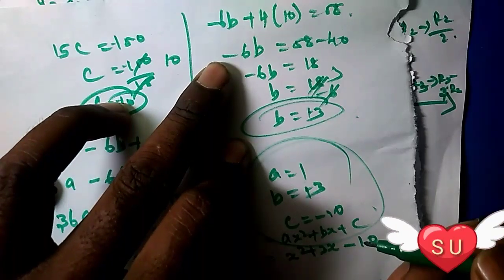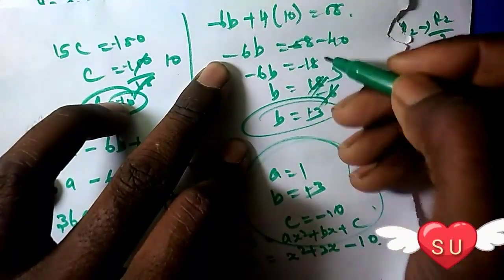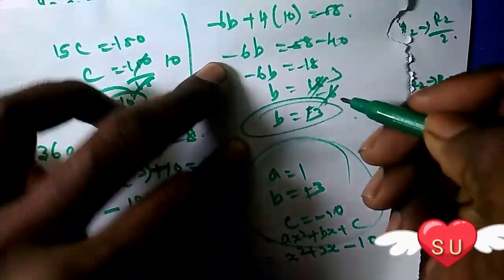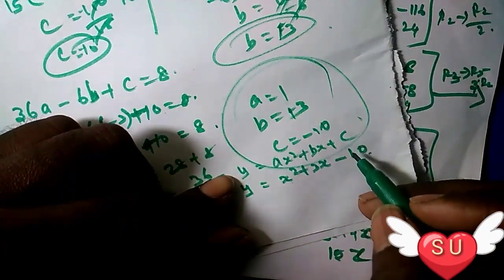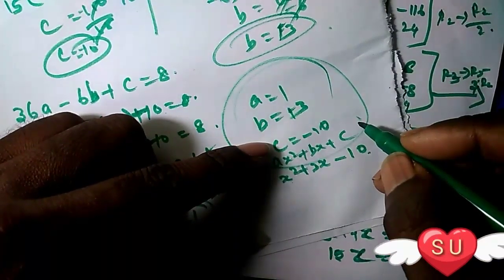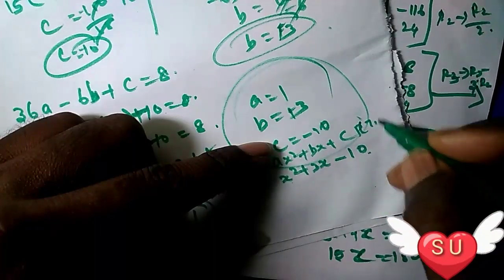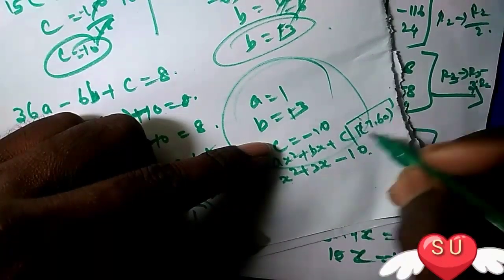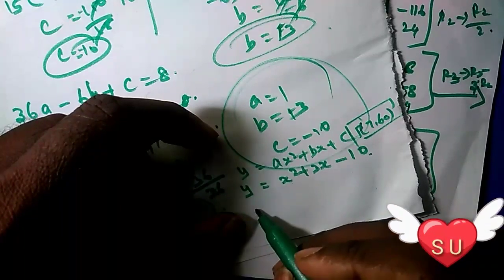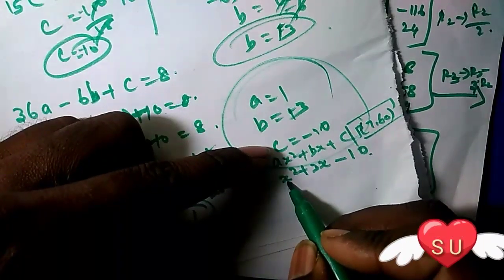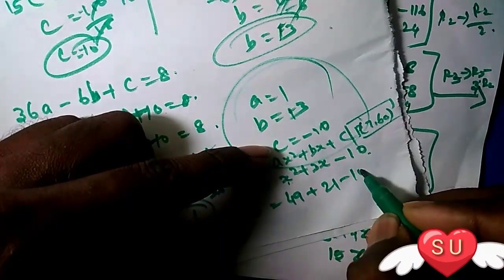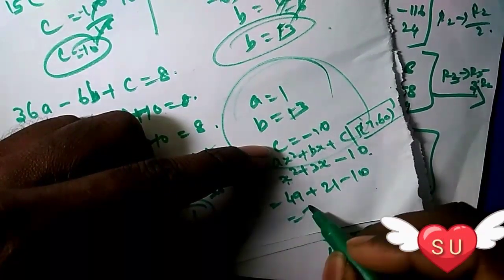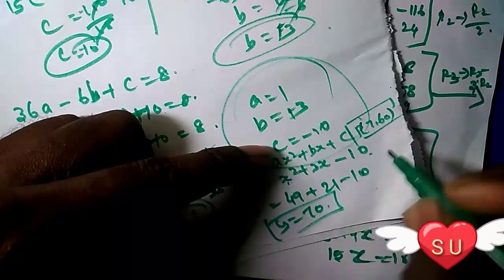Let's verify with a point. The curve passes through point (7, 16). When x = 7: y = 7² + 3(7) - 10 = 49 + 21 - 10 = 60. Wait, let me recalculate. This should equal 16. Let me check the calculation.